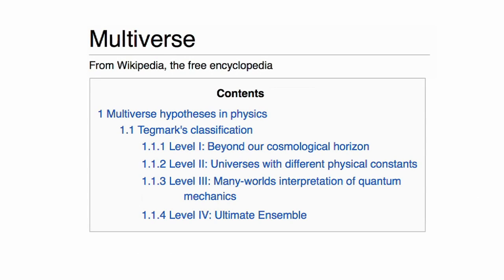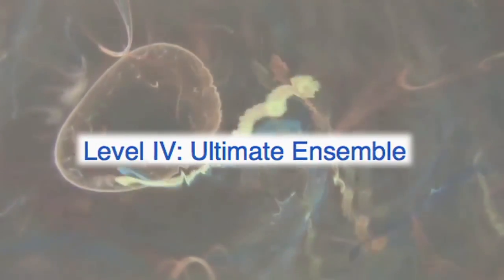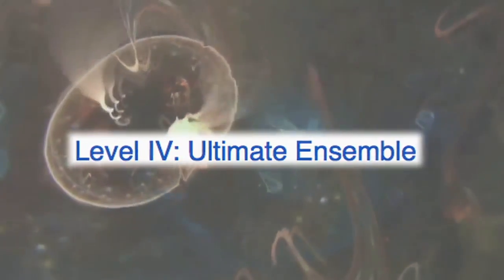Now let's look at level 4. This is the ultimate ensemble hypothesis of Tegmark himself. This level considers equally real all universes that can be described by different mathematical structures. Tegmark argues that this implies that any conceivable parallel universe theory can be described at level 4, and subsumes all other ensembles, therefore bringing closure to the hierarchy of multiverses, and there cannot be, say, a level 5.